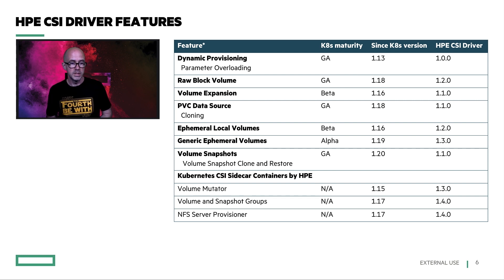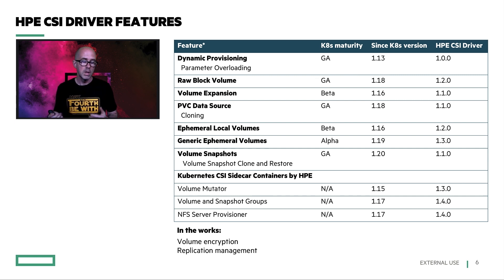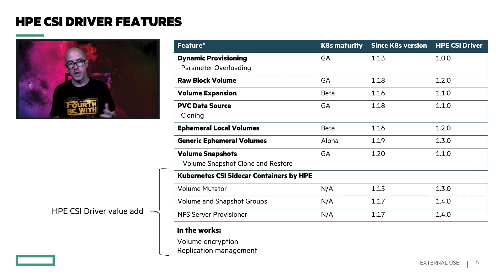Some capabilities currently in the works include volume encryption — back-end storage agnostic, using DM-Crypt with LUKS on Linux to create end-to-end volume encryption. We also have replication management in the works, which will allow you to manage a replication relationship between two storage systems directly from Kubernetes. These are all HPE CSI driver value-adds that some of our backends support today, as well as some third-party ones.